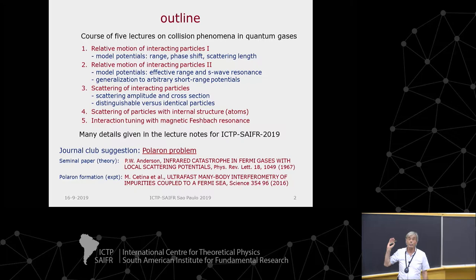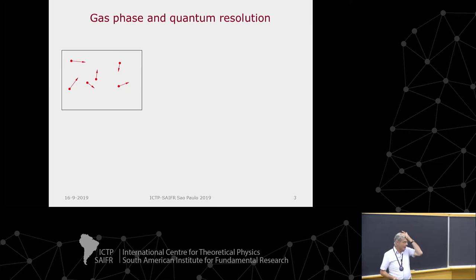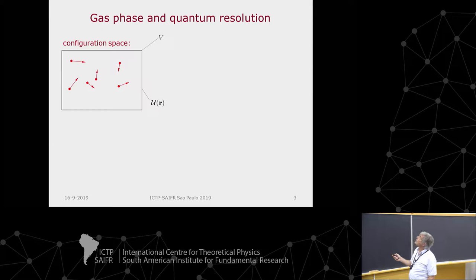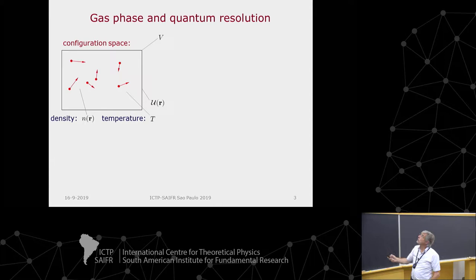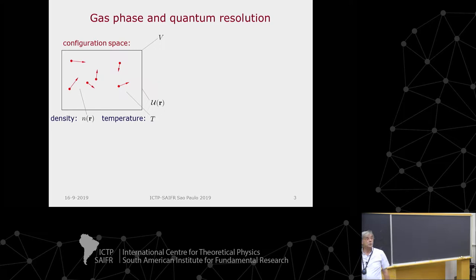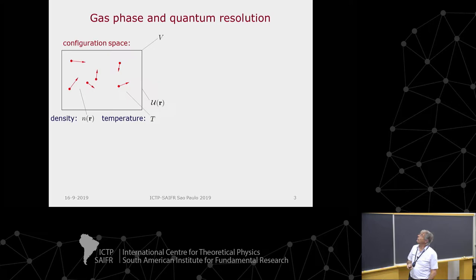Let's start. If we think of a gas, we typically imagine atoms moving around in a container. This is our configuration space — it has a certain volume and there's a confinement potential. We can define density and temperature. In our field, these potentials need not be a hard wall or physical surface. These days, this is an optical field or a magnetic field by which we can have confinement. It was one of the major achievements of the field that neutral atoms could be trapped — that was impossible before 1986.